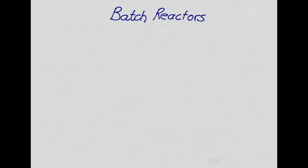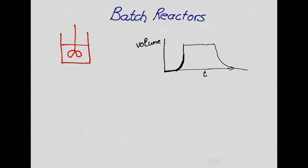Let us now consider batch reactors in contrast. A batch reactor, represented as a simple tank, does not have a continuous flow of material in and out. In a batch reactor, it is empty up to some point at which you start filling it, it reaches some volume where the reaction occurs, and then when the reaction is complete you empty it and the volume drops back to zero.